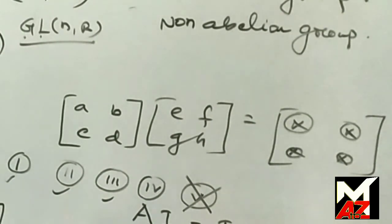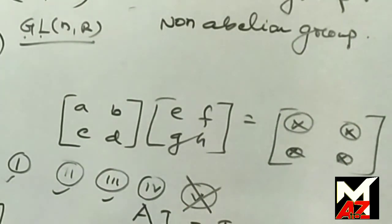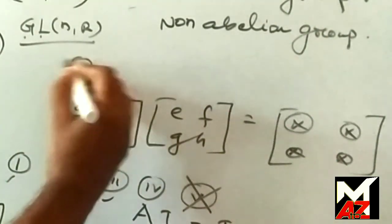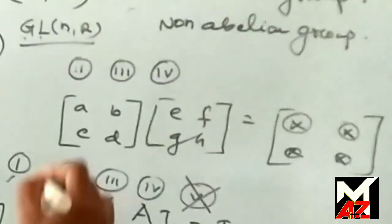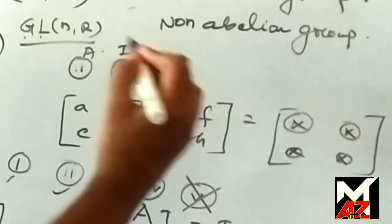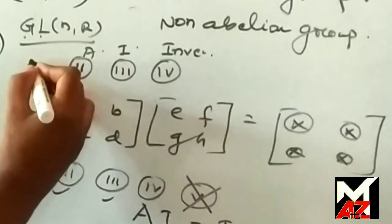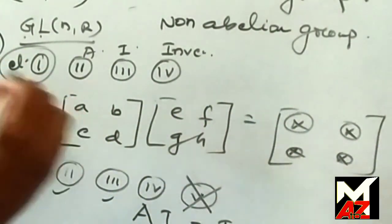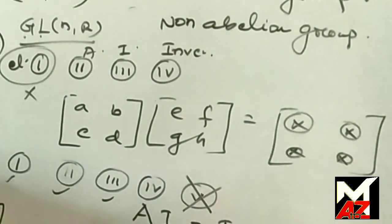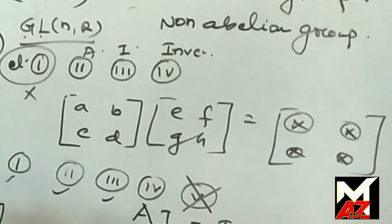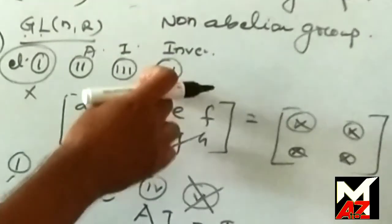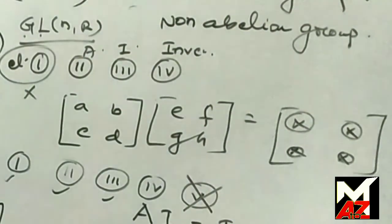This concludes today's class. Lastly, note that in some famous books, the definition of a group has only three properties: associativity, identity, and inverse — omitting the closure property. This is because when we consider an algebraic structure G star, the closure property is already implied by the definition of a binary operation. So if a book lists only properties 2, 3, and 4, that definition is also correct. Thank you for watching.